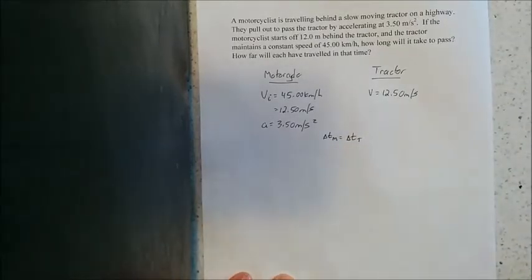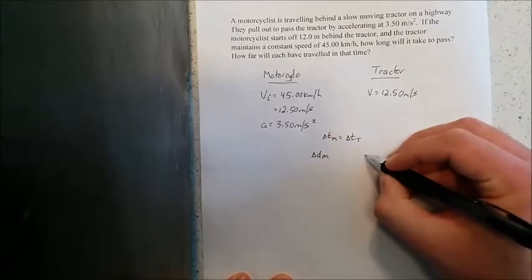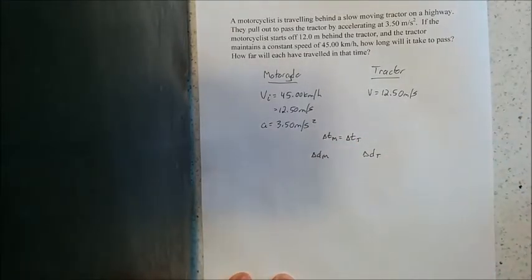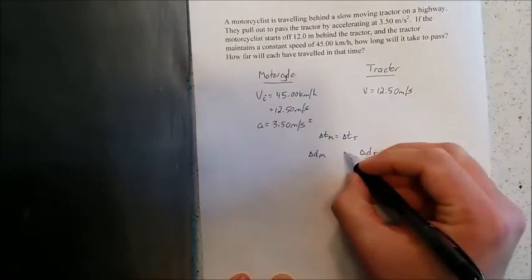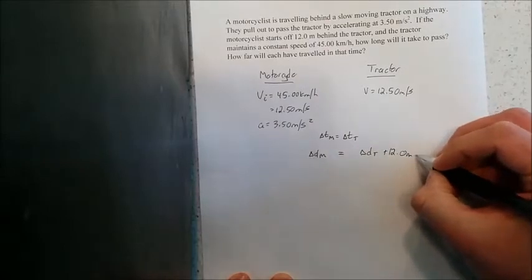Now we can take a look at the distance. If we compare the distance of the motorcycle to the distance of the tractor, we have to make them equal somehow. But we know that they're not equal because the motorcycle starts behind. So logically the motorcycle should travel further. To make these things equal, I should be adding the 12 meters to the distance that the tractor is traveling.